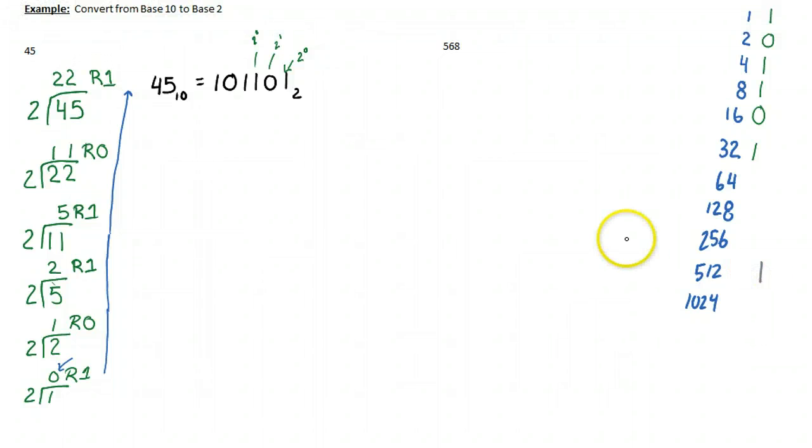So then what I say is I say, 512 plus 256. So 512 plus 256 is 768. That's too big. That's bigger than 568, so that's going to be flicked off.